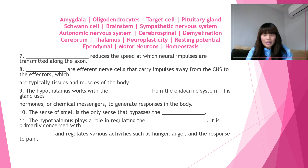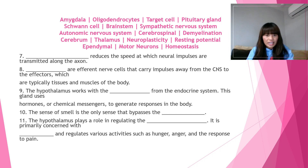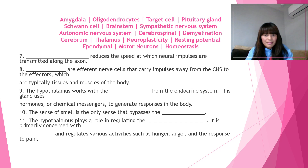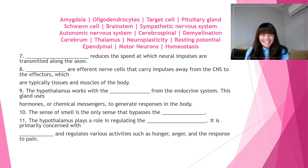Number eleven: the hypothalamus plays a role in regulating the blank. It is primarily concerned with blank and regulates various activities such as hunger, anger, and the response to pain. There are two answers for number eleven: autonomic nervous system and homeostasis.